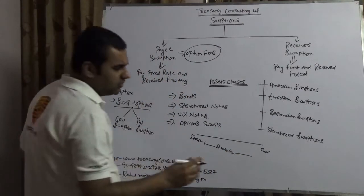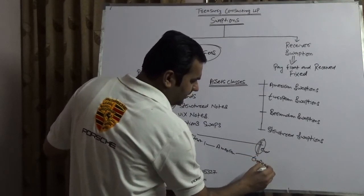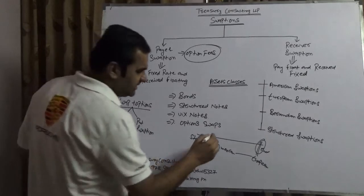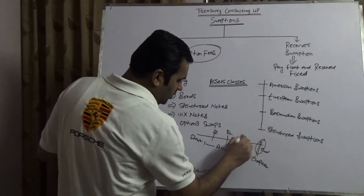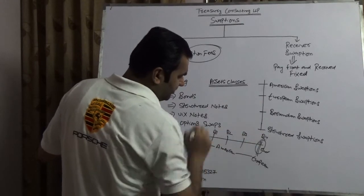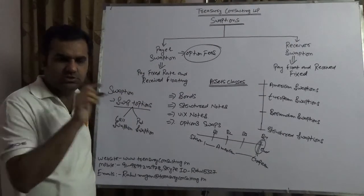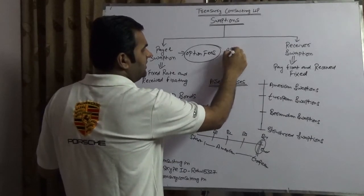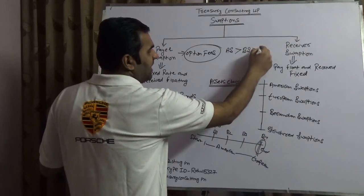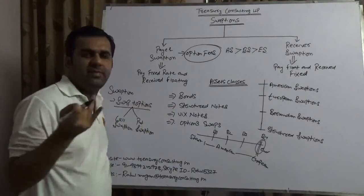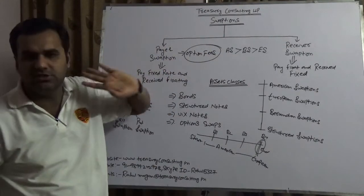European swaption means you can only exercise at maturity. Bermudian swaption means there would be different settlement dates — for example, Bermudian 1, Bermudian 2, Bermudian 3, and Bermudian 4. Regarding option fees, American swaption has the highest fees, followed by Bermudian swaption, and then European swaption. In India, neither American, Bermudian, nor European swaptions are possible.